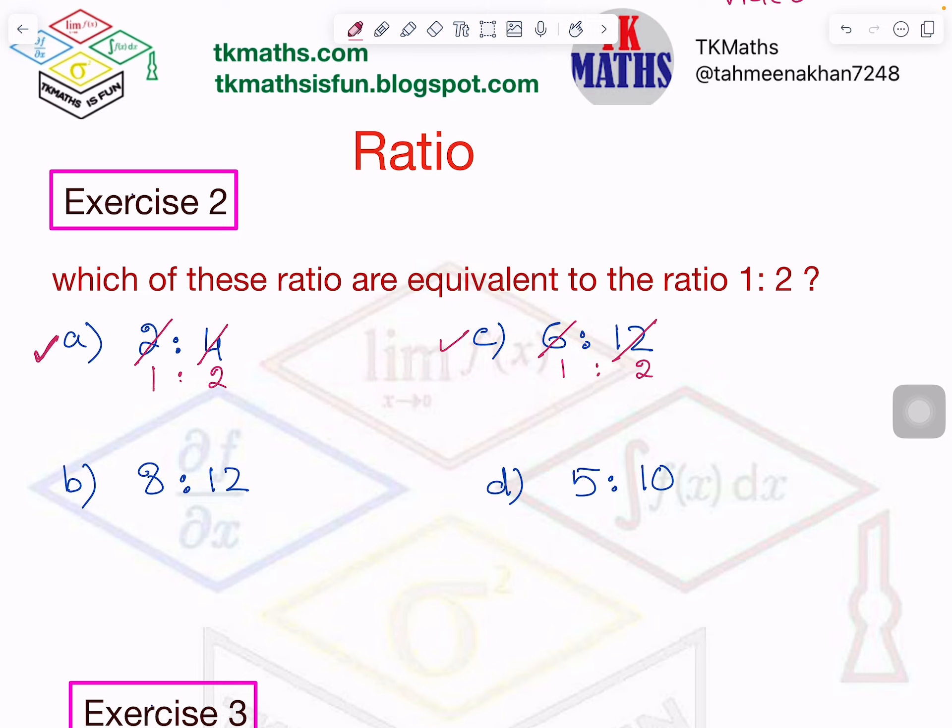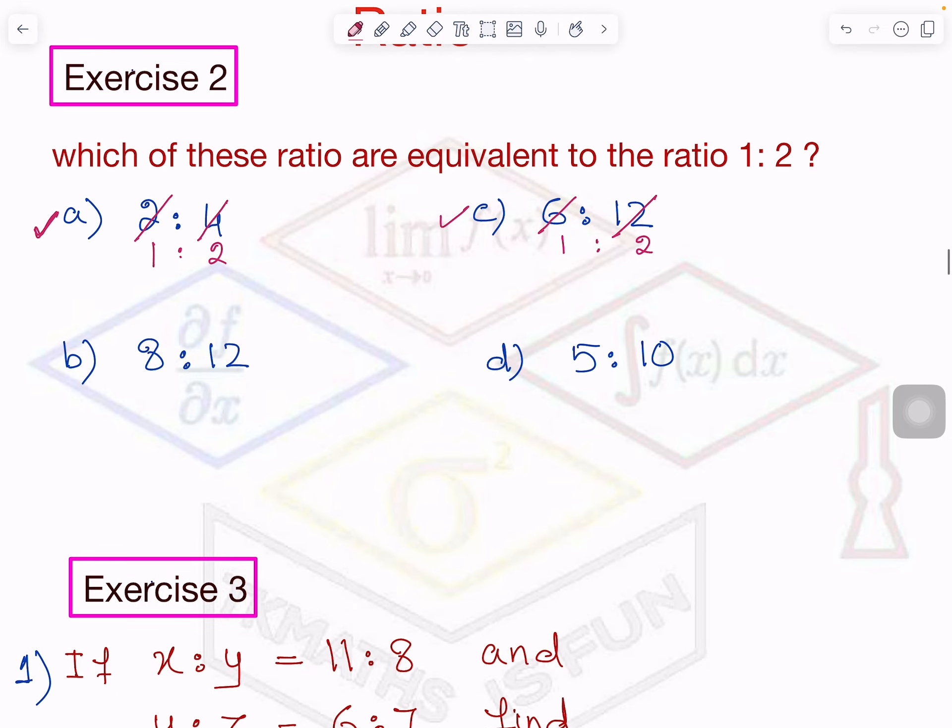This one, B, I will cancel it by the table of, for example, 4. 4 times 2 is 8, 4 times 3 is 12. So ratio is 2 is to 3, which is not equal to 1 is to 2. So not this one.